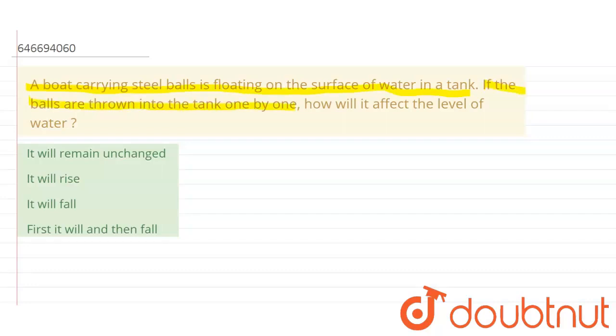Okay, so the mass of one ball be m, and the mass of the other ball plus the boat be capital M.